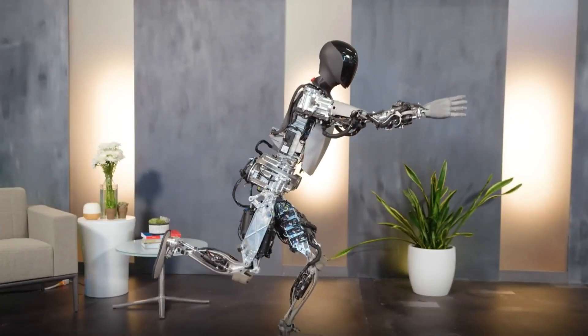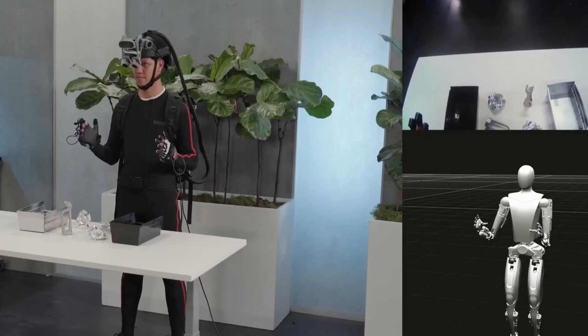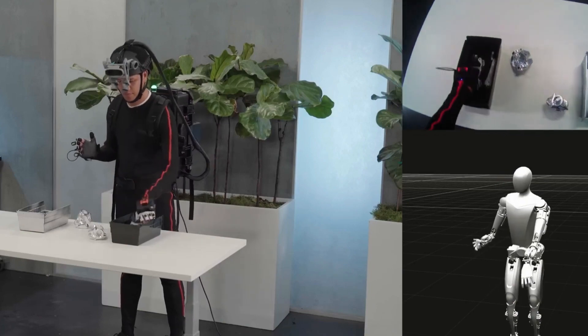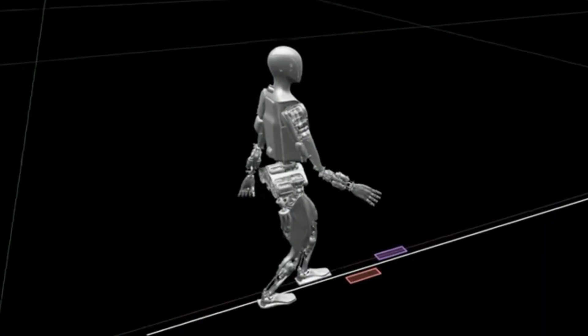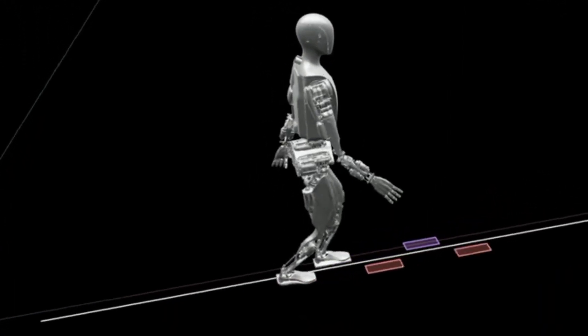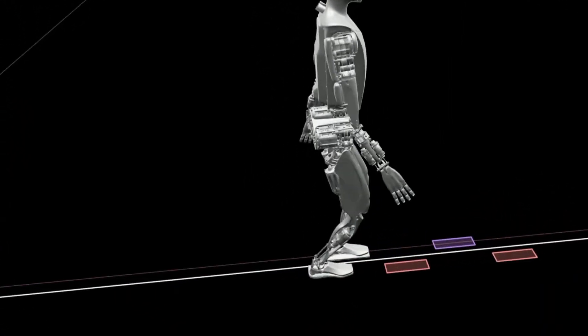The neural net learns to balance on one foot and maintain a yoga pose by observing human demonstrations and receiving feedback from humans or sensors. The neural net can also adapt to different poses and environments, such as standing on a slope or hill. The neural net can control its body and maintain its stability.